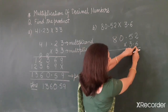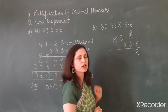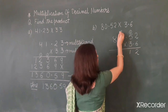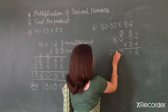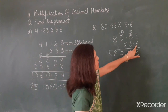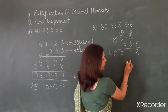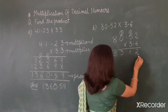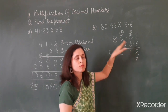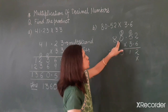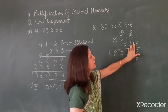We will multiply this number by 6. Six twos are twelve, one will carry over; six fives are thirty, thirty and one is thirty-one, three will carry over; six zeros are zero, zero and three is three; and six eights are forty-eight. Now we will multiply by 3, because if we do not consider the position of the decimal point, then 3 is at the tens place.